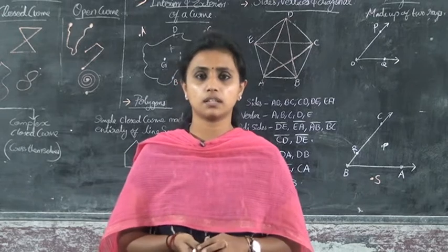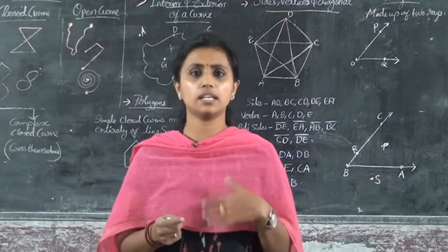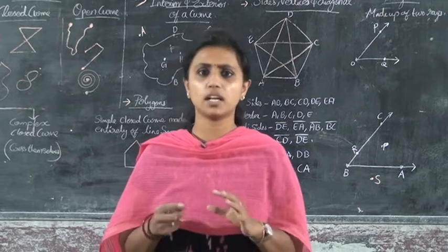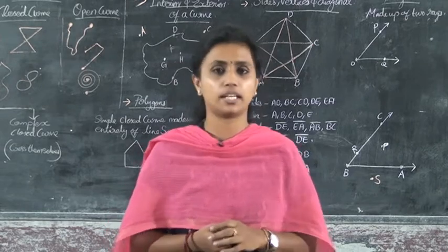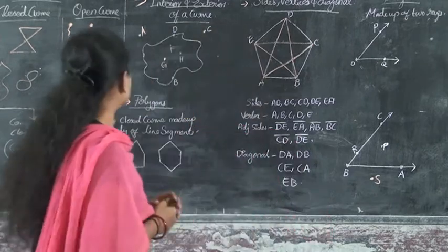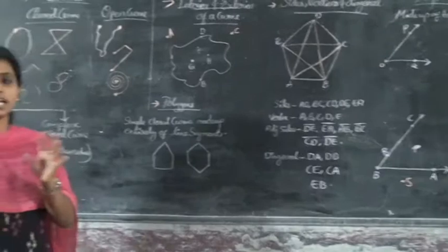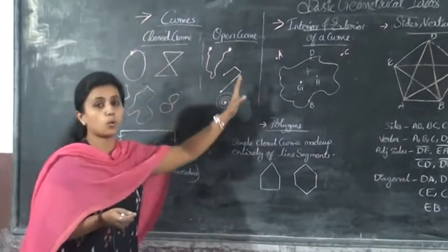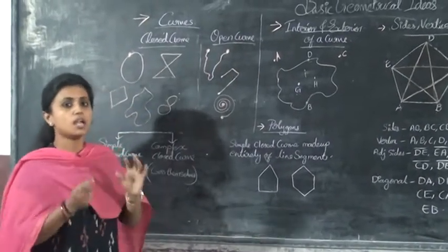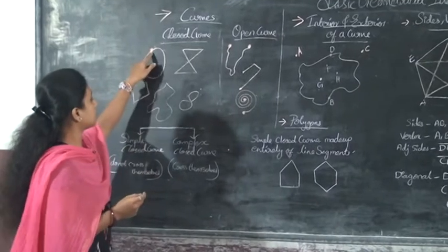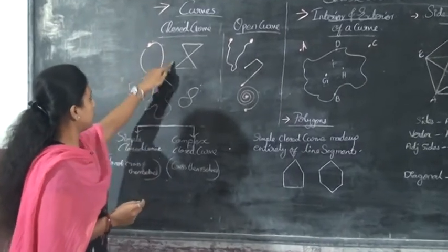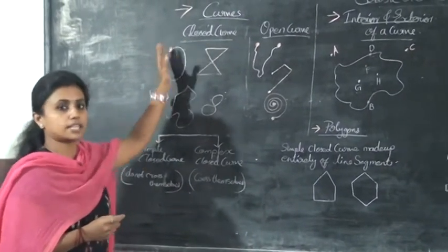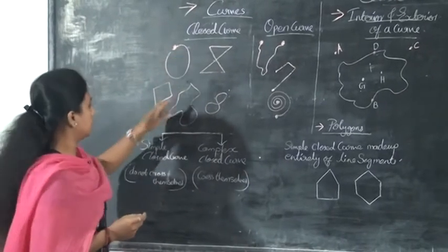A curve is not straight. Curves are divided into 2 types. The first one is closed curve and an open curve. A closed curve means that the starting point and the end point of the curve meet — that is a closed curve.